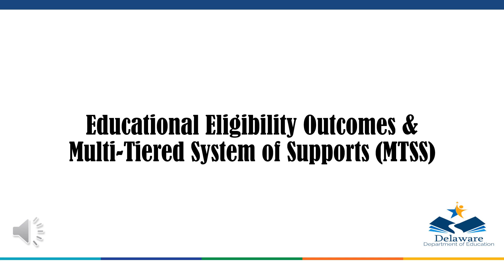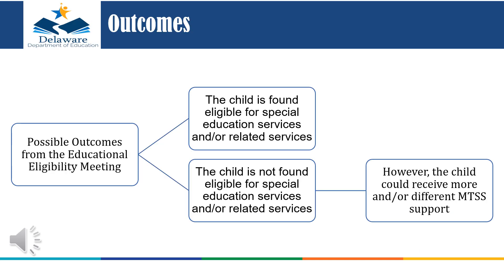I will now discuss the possible outcomes from the educational eligibility process, such as the Multi-Tiered System of Supports, also known as MTSS. Upon completion of the process, outcomes include either finding the child eligible for special education services and related services, or not finding the child eligible — though the child could still receive other MTSS supports. It is important to keep in mind that a medical diagnosis of autism does not automatically mean it has an adverse effect on educational performance. Therefore, not all individuals with a medical diagnosis of autism will receive an educational classification of autism.